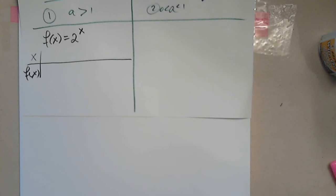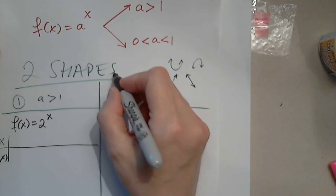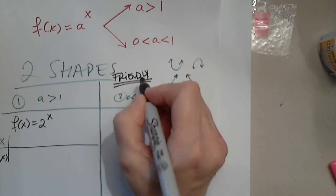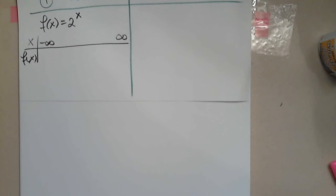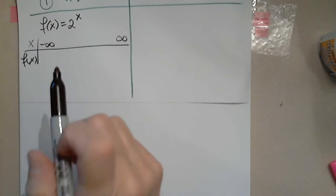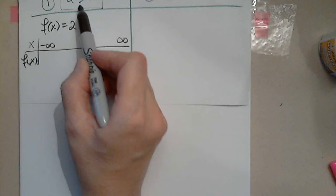The first step is to look for the domain. This is a nice, friendly function — no headaches. It doesn't give me any headache. I don't have to think about the domain — I'll just say anything goes. Remember, the domain is for x, not for the base. The base is fixed; it's a given number.